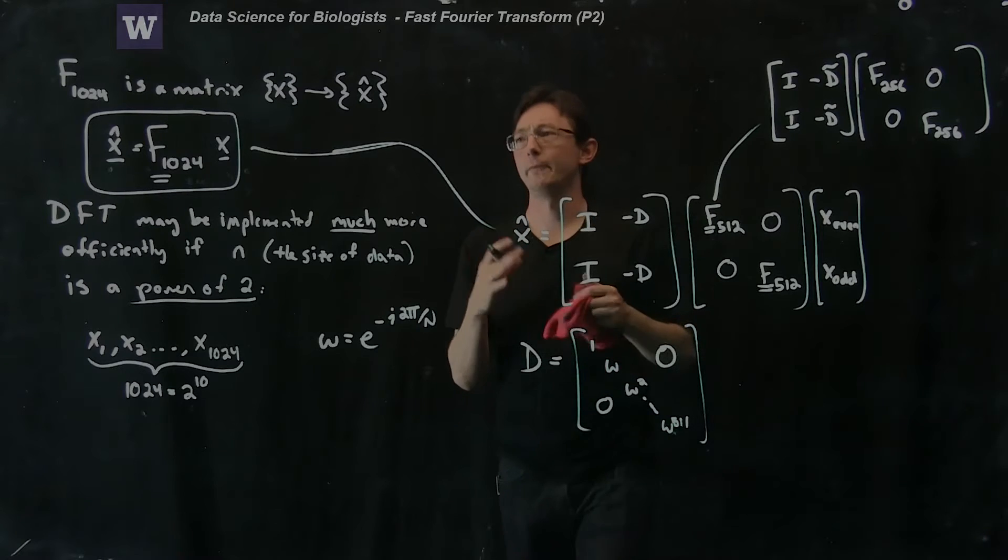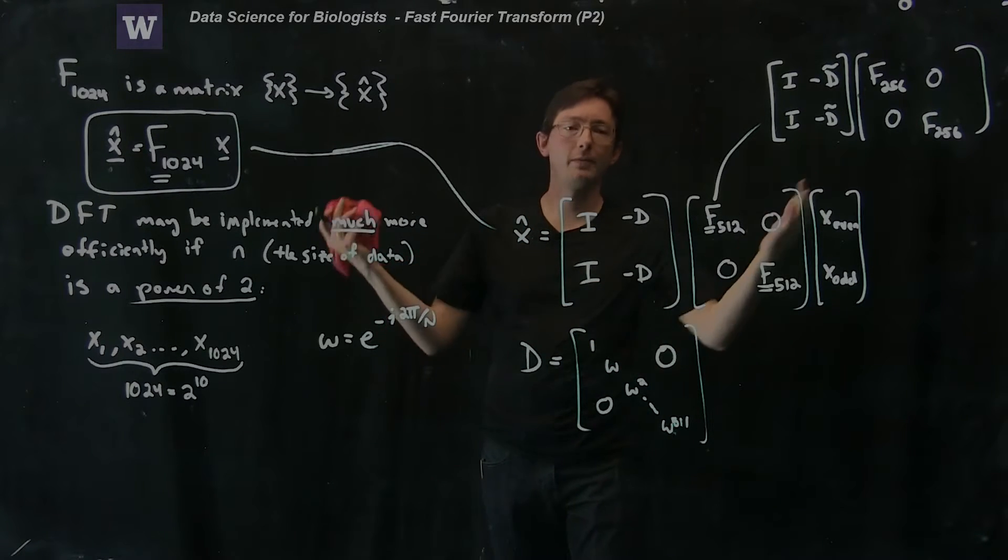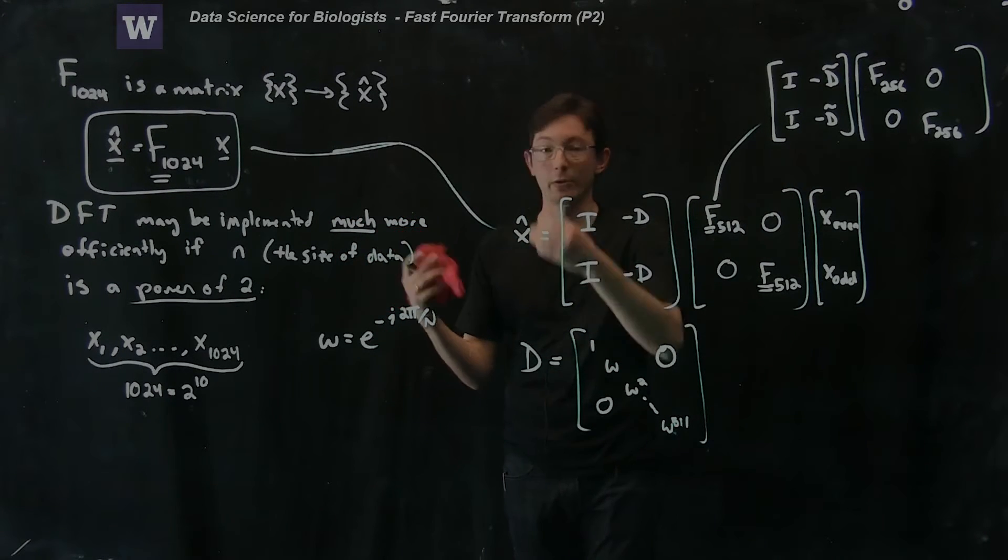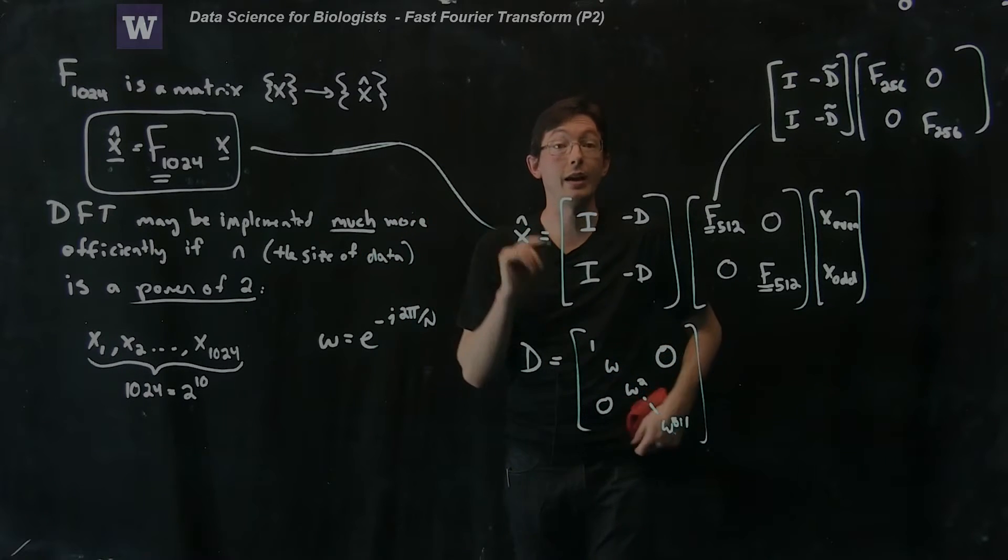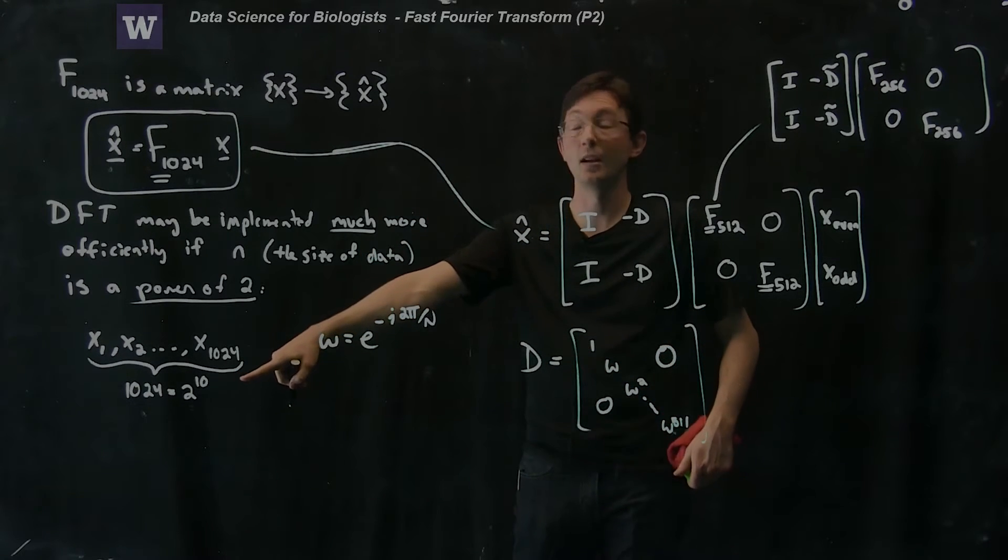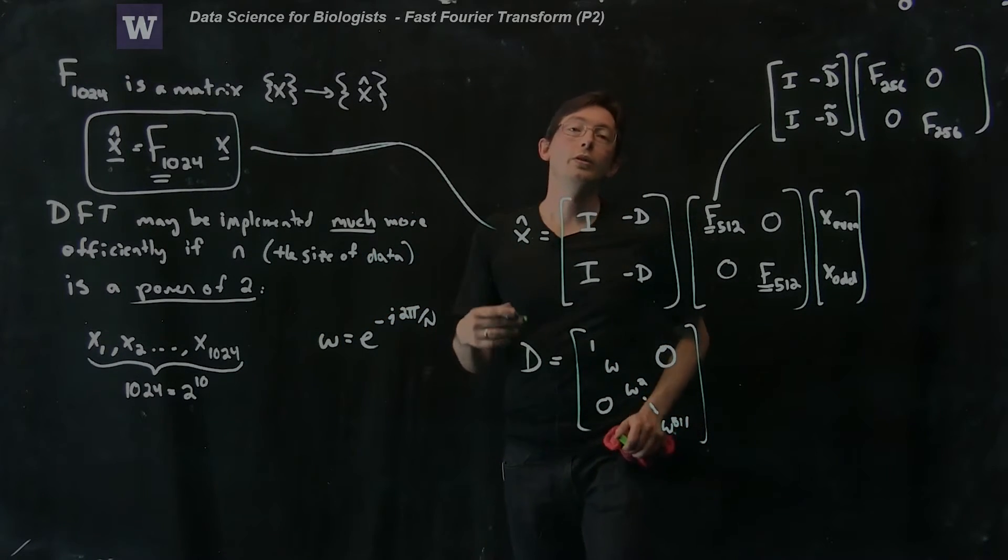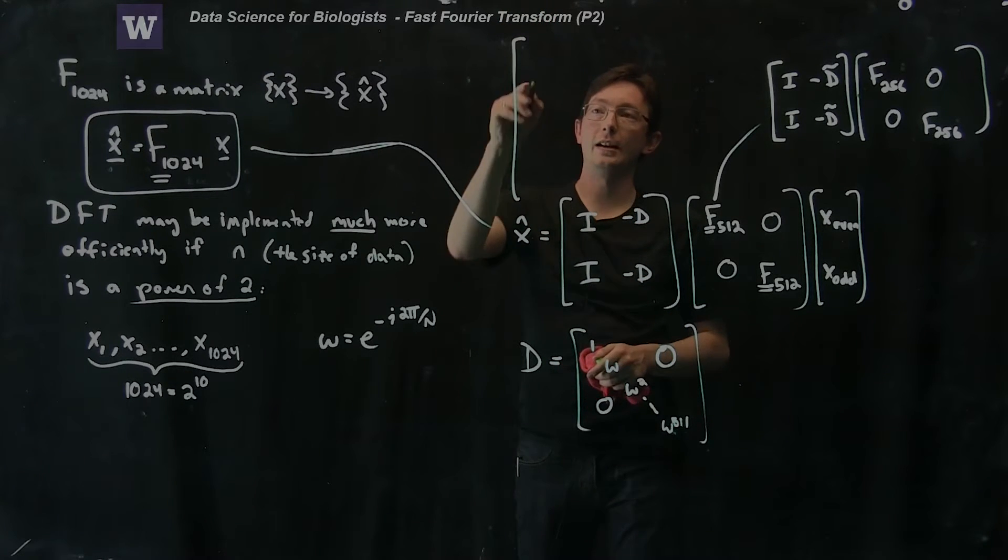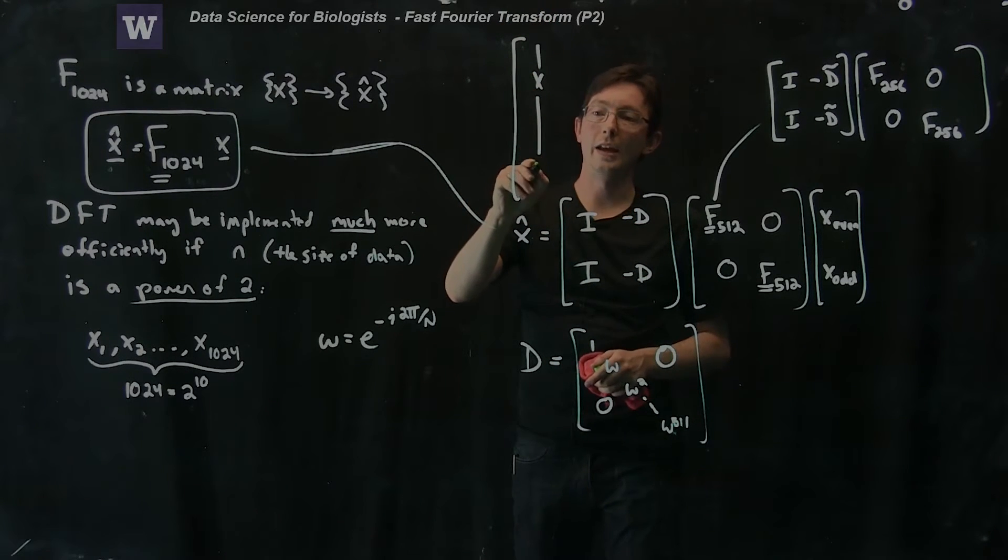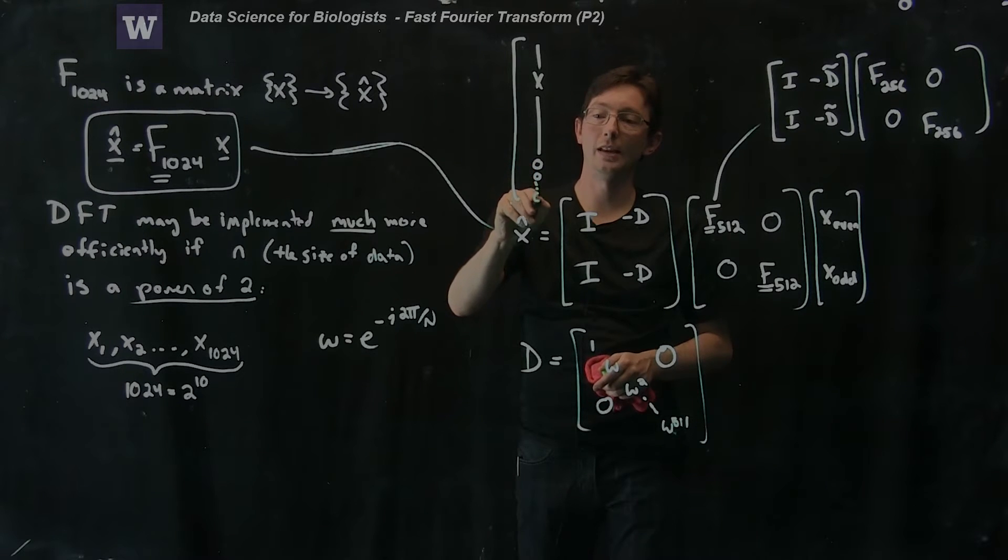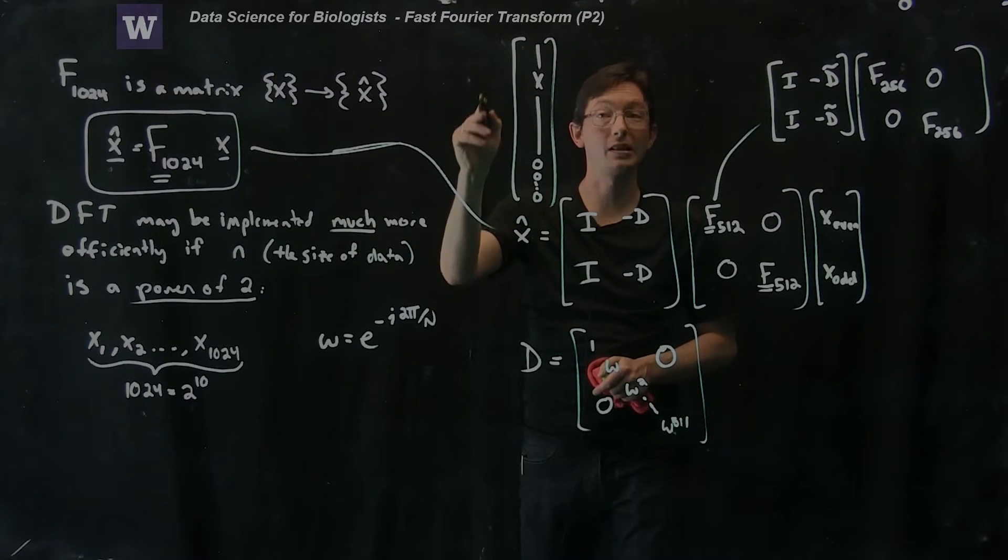Now you might wonder, practically what if my data isn't a whole power of 2? What if I have exactly 1,000 data measurements and not 1,024? Well, you can always take your data, and you can always take your data x, and you can pad it with as many zeros as you need to get it to the nearest power of 2.